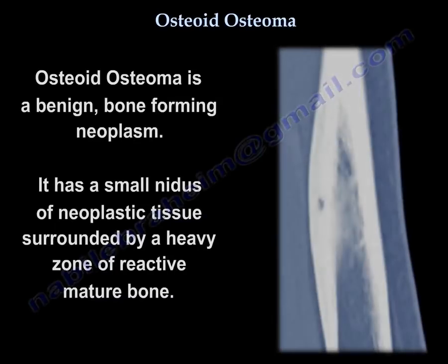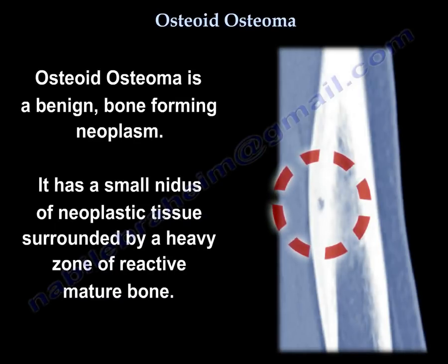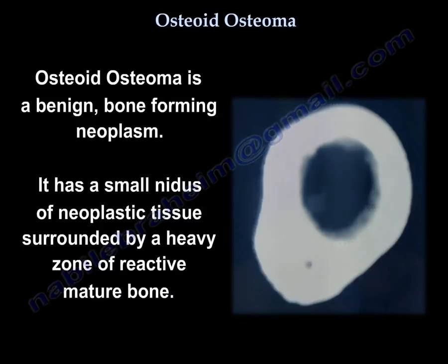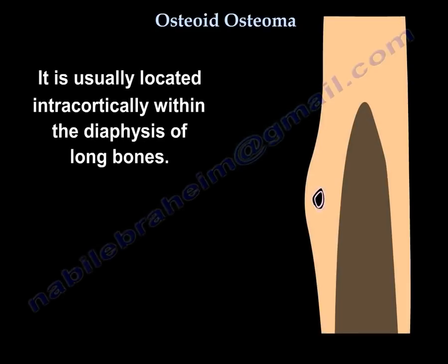Osteoid Osteoma is a benign bone-forming neoplasm. It has a small nidus of neoplastic tissue surrounded by a heavy zone of reactive mature bone. It is usually located intracortically in the diaphysis of long bones.